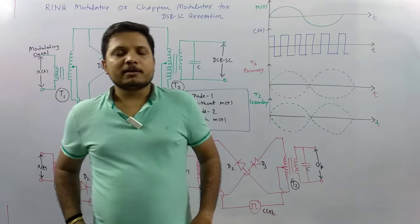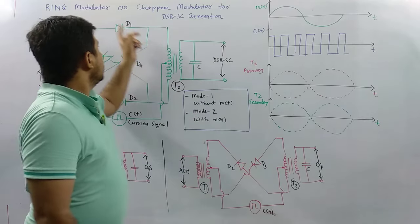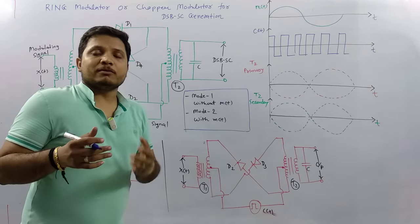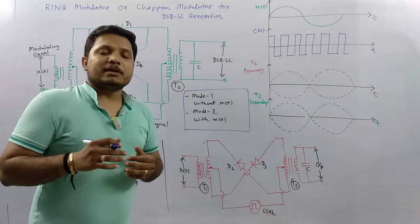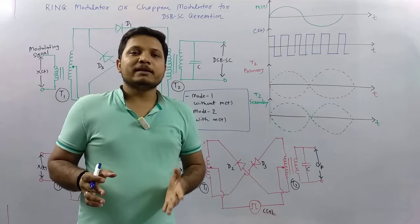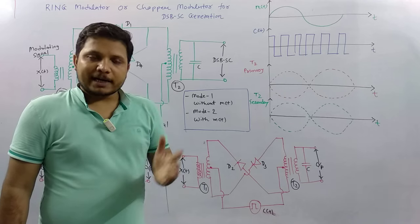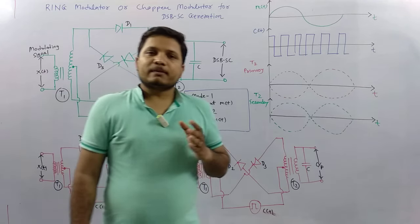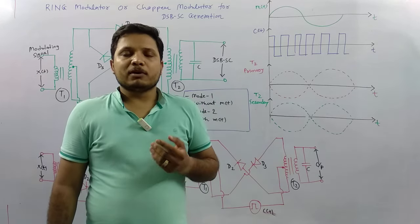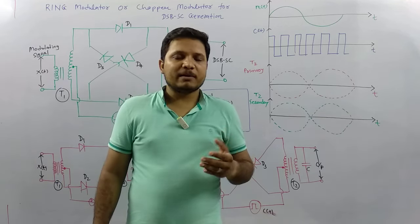Welcome to the communication engineering playlist. In this session I will explain the ring modulator, also referred to as a chopper modulator, which is used for generation of a DSBSC signal. I will explain the circuit of the ring modulator first, then the two different modes of working, and then we will observe the waveforms that explain how the ring modulator functions.